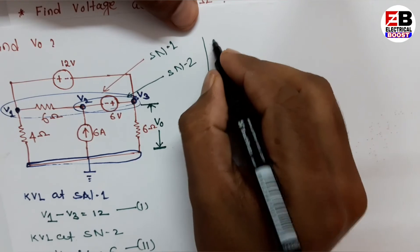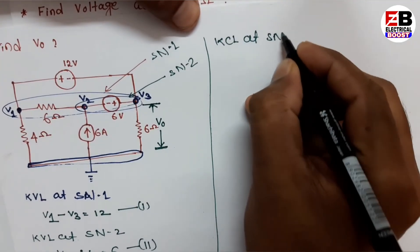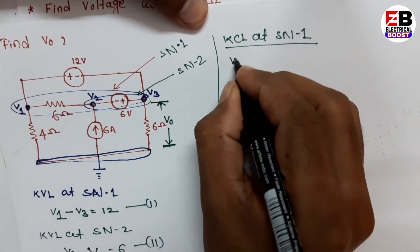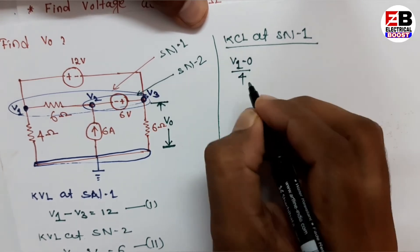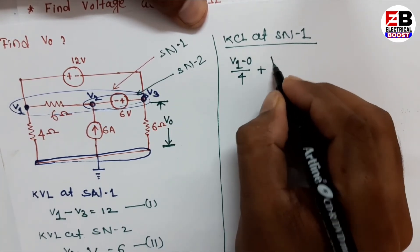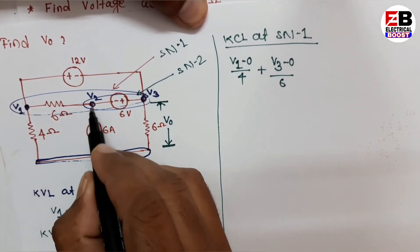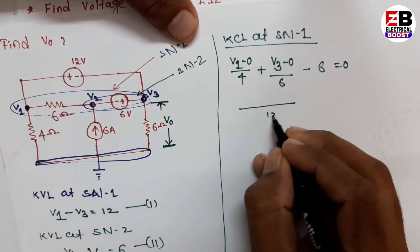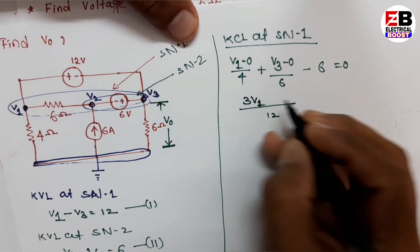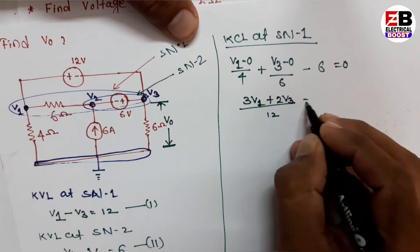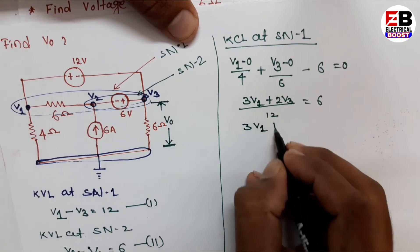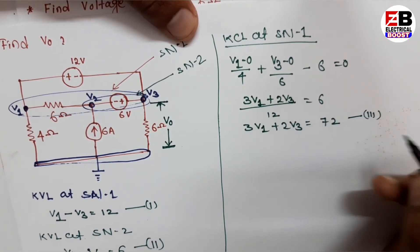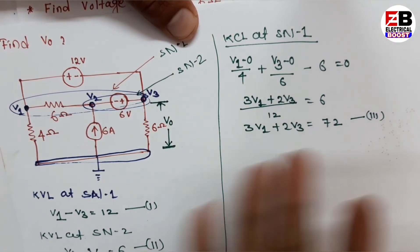Now applying KCL at Supernode 1: the current through the 4 ohm resistor is V1 divided by 4, plus the current through the 6 ohm resistor is V3 divided by 6, minus the 6 ampere source current equals zero. Taking LCM of 12, this gives 3V1 plus 2V3 equals 72. This is our third equation. With three nodes we have three equations to solve.